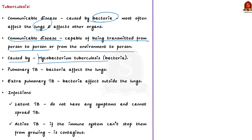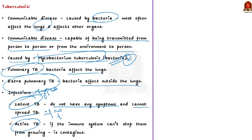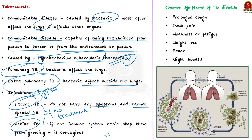When the bacteria affect the lungs, it is called pulmonary TB; when outside the lungs, it is extra-pulmonary TB. There are two types of TB infections: active TB and latent TB. People with latent TB do not have symptoms and cannot spread TB, but if untreated, they may develop active TB in the future. The TB bacteria become active if the immune system cannot stop them from growing, making active TB contagious.